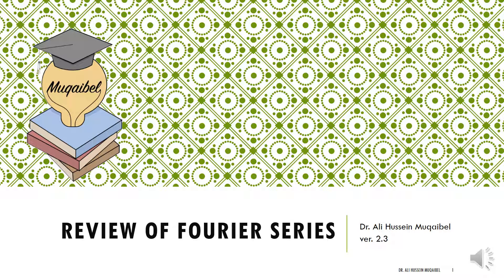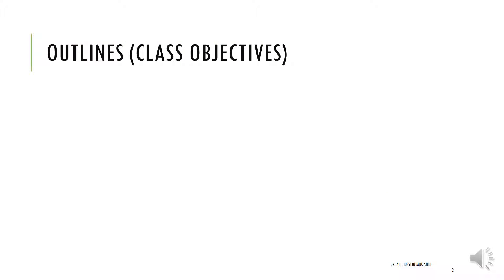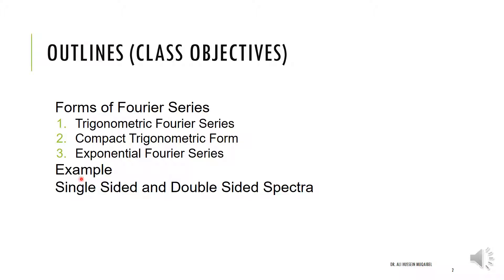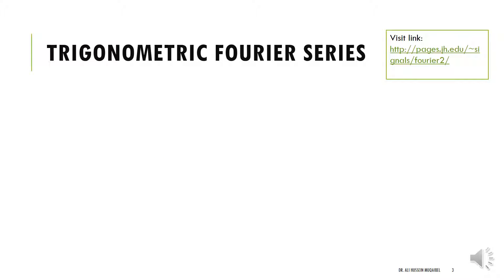This video is a quick review of Fourier series. This lecture covers the following objectives: first, we introduce the different forms of Fourier series — the trigonometric Fourier series, the compact form of the trigonometric Fourier series, and the exponential Fourier series. After some examples, we cover the important concept of the spectrum, looking at the single-sided and double-sided spectrum.